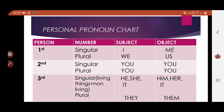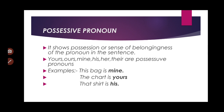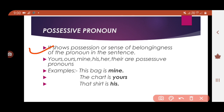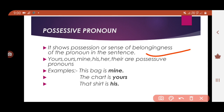Now the second kind is possessive pronoun. The word 'possessive' means it shows possession or a sense of belongingness of the pronoun in a sentence. Possessive pronouns include: my, your, his, yours, ours, mine, her, their, etc. Possessiveness means this thing is mine, that thing is yours — it belongs to someone.